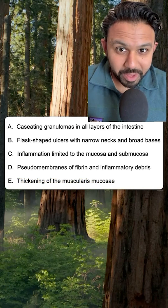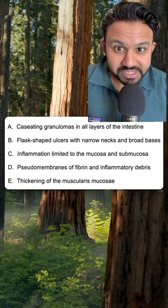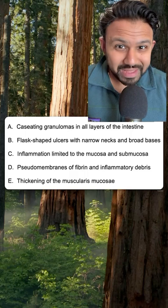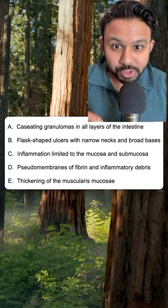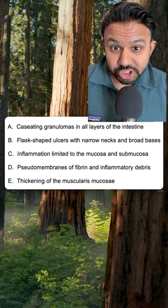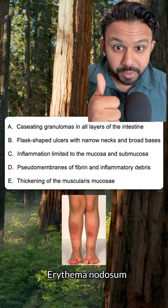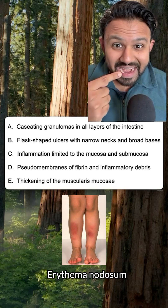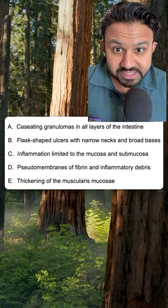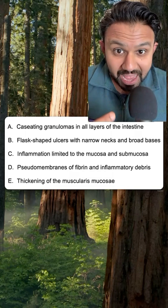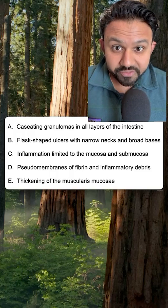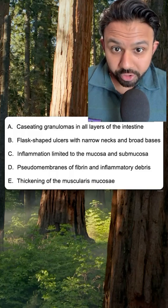Now we talked a lot about inflammatory bowel disease. The USMLE loves for you to know the extra intestinal manifestations of IBD. They include rashes such as erythema nodosum and aphthous stomatitis, all the way to arthritides such as the IBD-associated seronegative spondyloarthropathy.